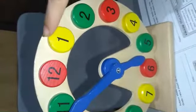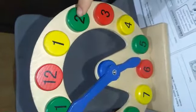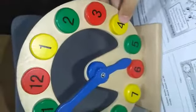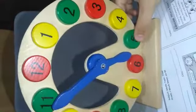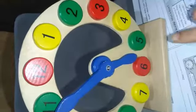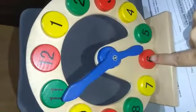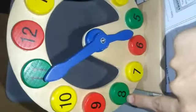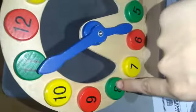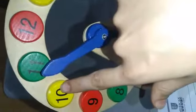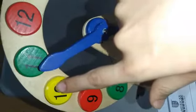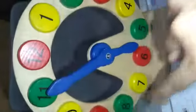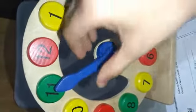Okay? 12 to 1, 5 minutes. 1 to 2, 5 plus 5, 10 minutes. 2 to 3, 15 minutes. 3 to 4, 15 plus 5, 20 minutes. 20 plus 5, 25 minutes. 25 plus 5, 30 minutes. 30 plus 5, 35 minutes. 35 plus 5, 40 minutes. 40 plus 5, 45 minutes. 45 plus 5, 50 minutes. 50 plus 5, 55 minutes. And 55 plus 5, 60 minutes. So, this round has 60 minutes. And this is a minute needle.